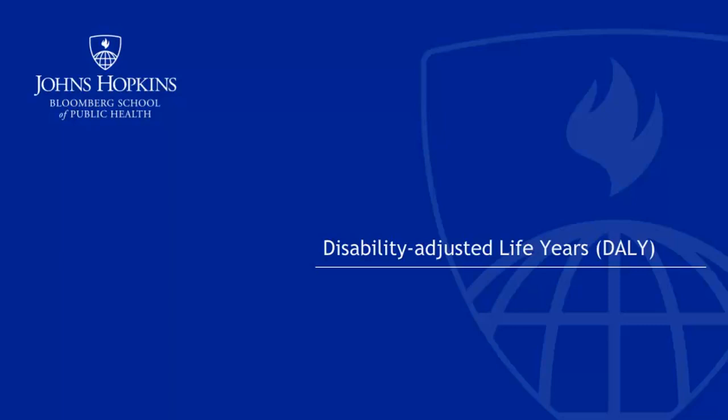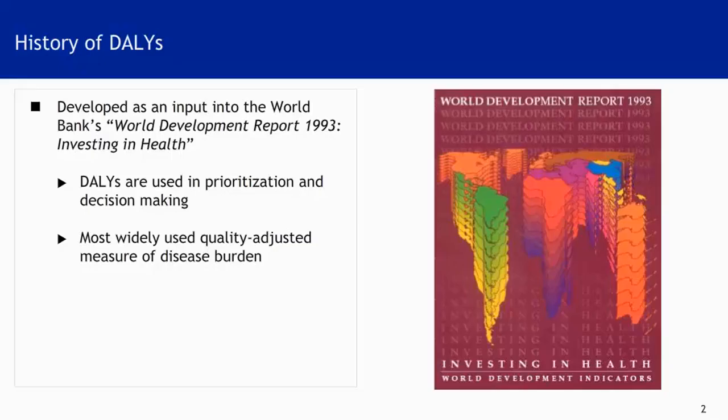We will wrap up our measures of disease burden with two measures that are intense in their calculations and powerful in their meaning. First, Disability Adjusted Life Years, or DALYs. DALYs were initially developed for the World Bank's World Development Report in 1993. This particular disease burden measure is used in prioritization and decision-making and is one of the most widely used measures of disease burden.